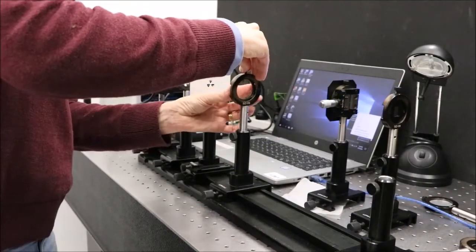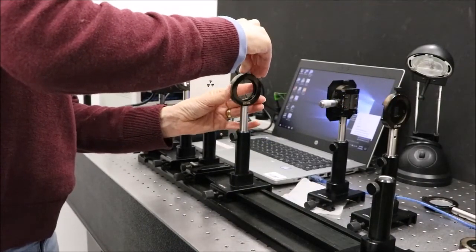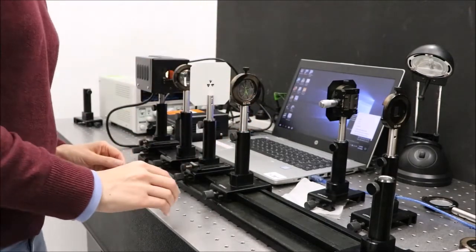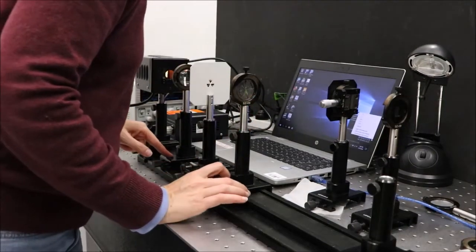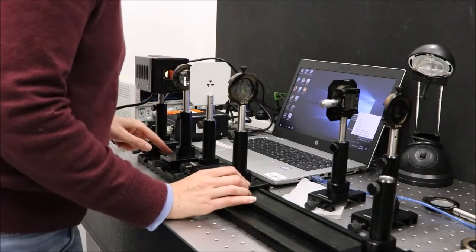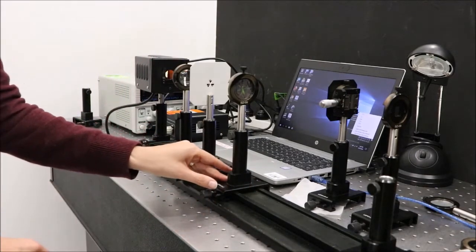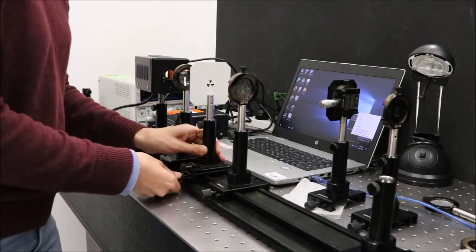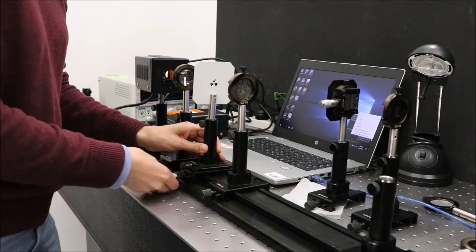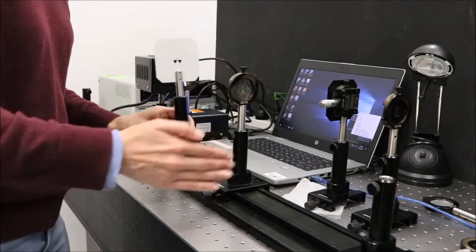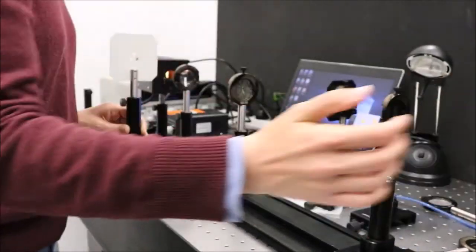Add the collimator lens to the rail and move it so it's about 20cm from the collector lens. We'll take out the screen and adjust the position of this collimator lens so that it gives us a roughly parallel beam of light traveling down the rail.